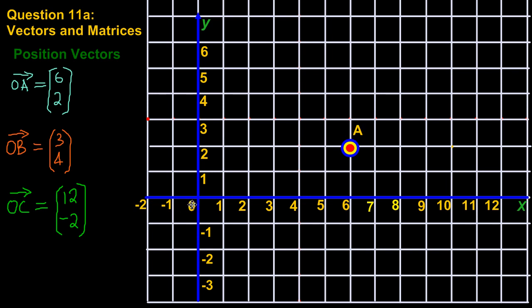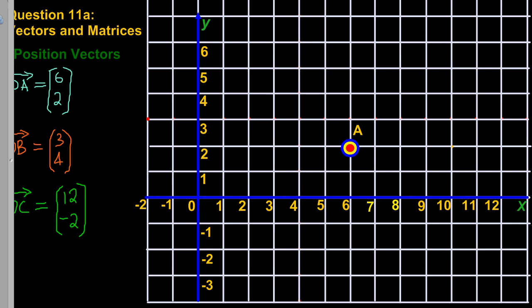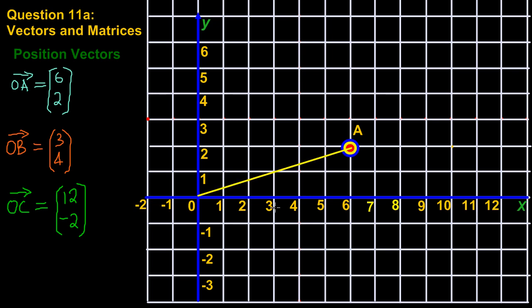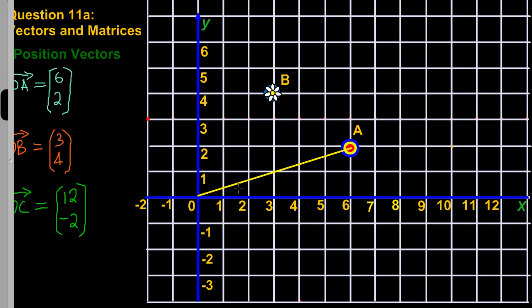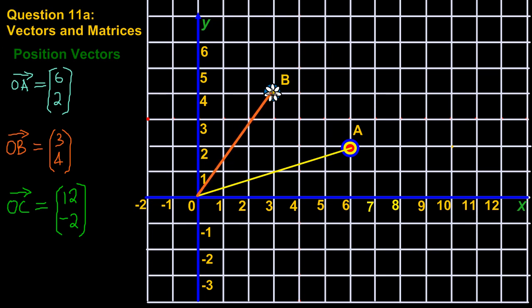My origin is O, so what they're basically saying is that from O to A — from the origin to the point A — that's simply what they're saying is 6, 2. Now for OB, they're saying O to B is 3, 4. The 3 represents my X value, so I'm running 3 on my X axis, and then running up to 4 on my Y axis. That's the point B. This line here would represent the distance from O to B.